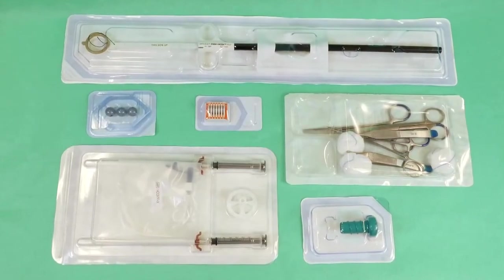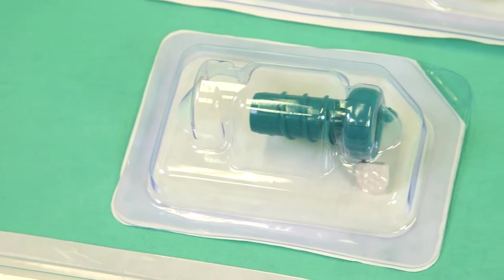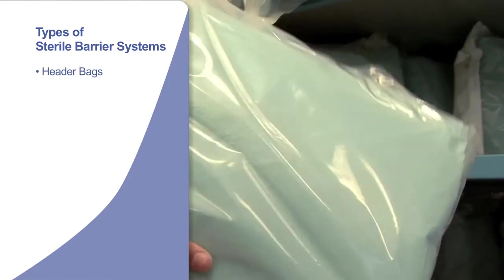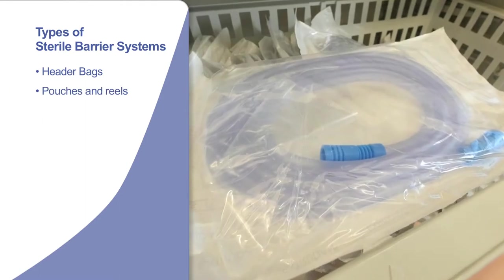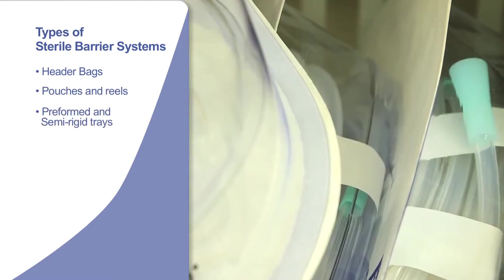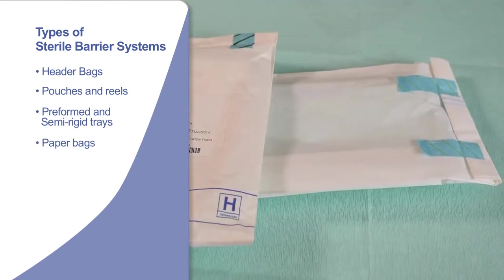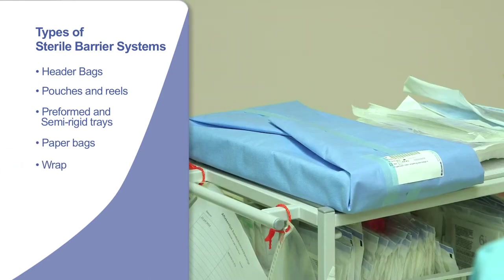There are a variety of sterile barrier systems designed for different applications. These include header bags, pouches and reels, preformed and semi-rigid peelable trays, paper bags, and sterilization wrap.